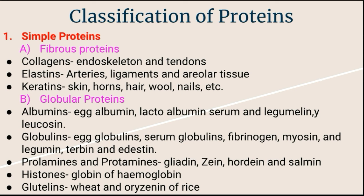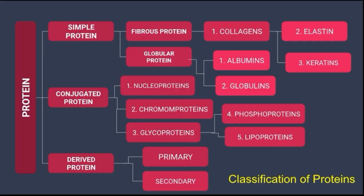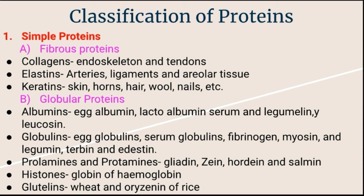Today we completed a tree diagram of proteins. In the tree diagram we saw simple protein, conjugated protein, and derived protein. Today we completed only one type — the simple protein — covering fibrous protein and globular protein. Remaining parts we will see later on. Thank you very much.